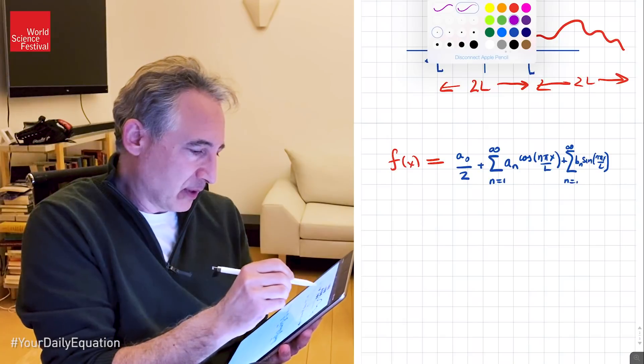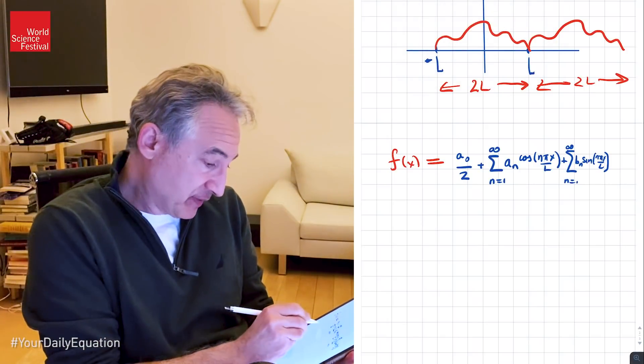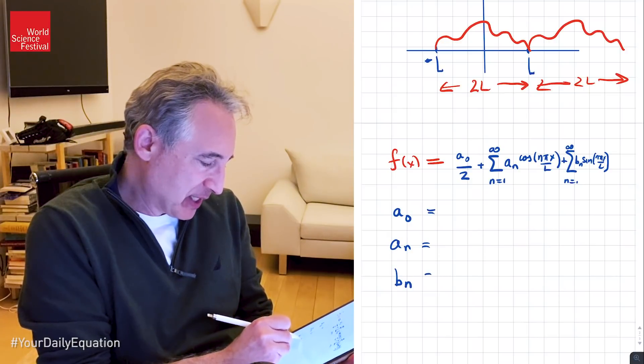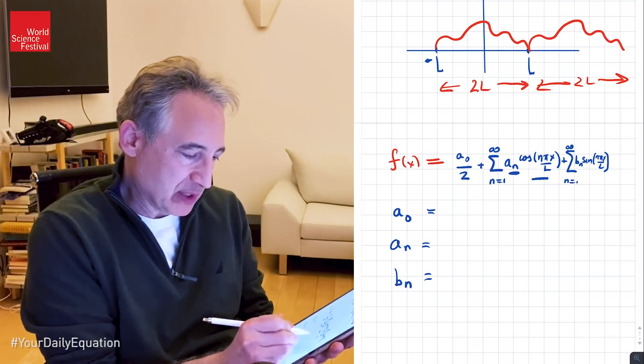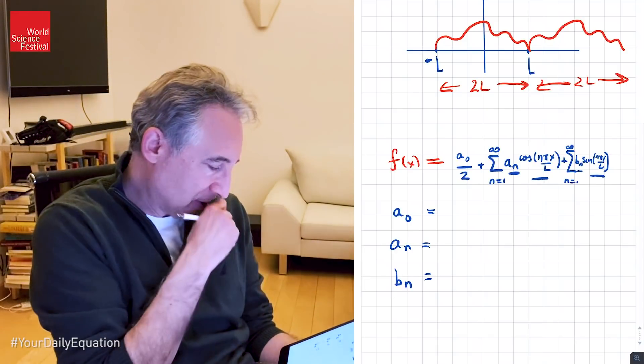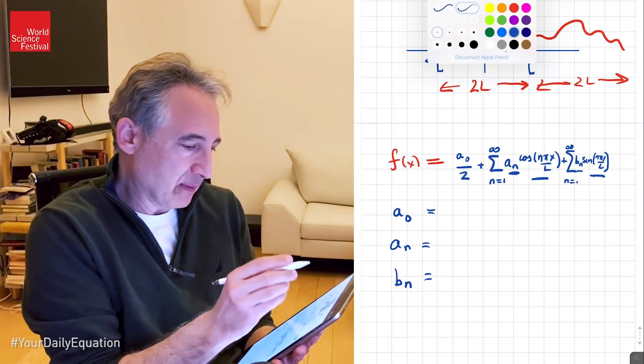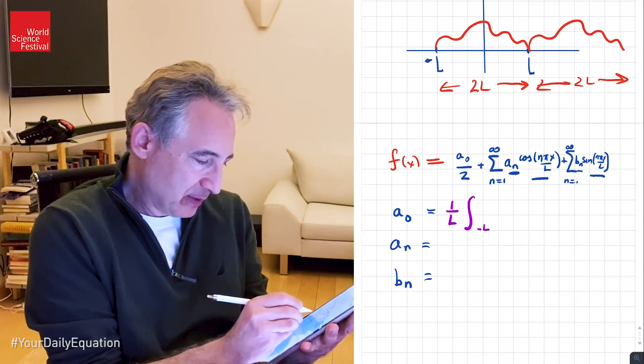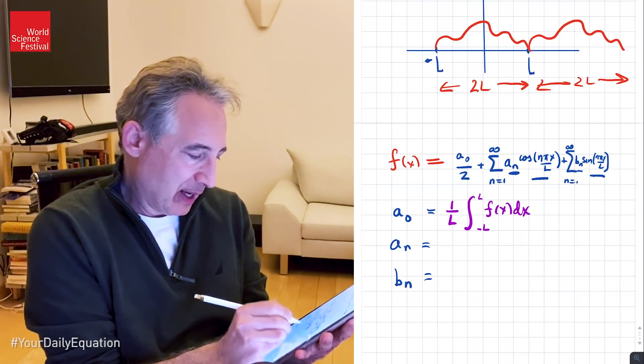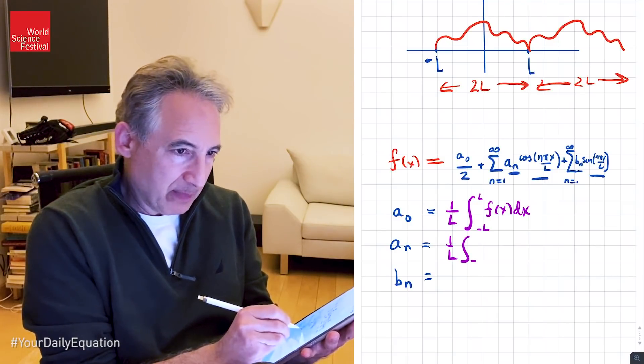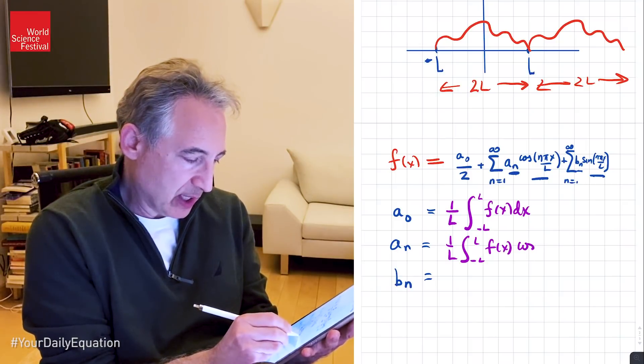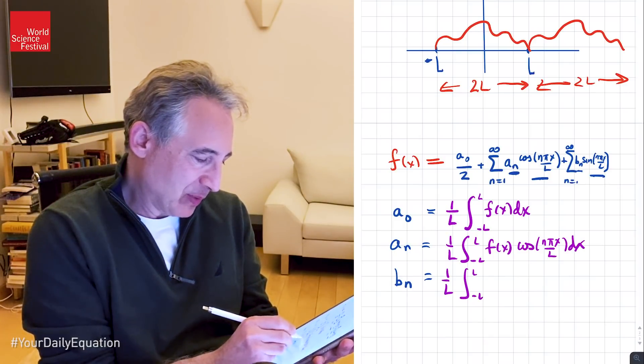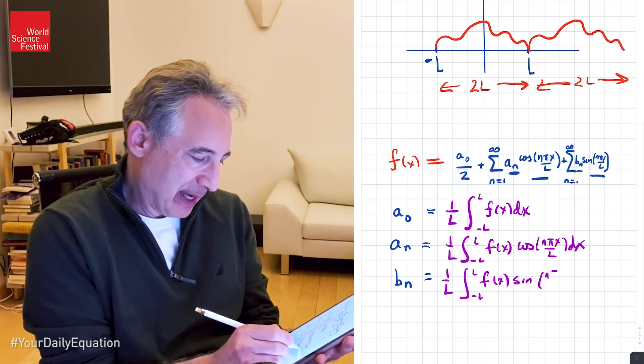But I want to finish off the equation, the theorem, because what Fourier does gives us an explicit formula for a_0, a_n, and b_n. That is an explicit formula, in the case of the a_n's and b_n's, for how much of this particular cosine and how much of this particular sine—sine n pi x over L, or cosine of n pi x over L. And here is the result. So let me write it in a more vibrant color. So a_0 is 1 over L, the integral from minus L to L of f of x dx. a_n is 1 over L, integral from minus L to L, f of x times cosine of n pi x over L dx. And b_n is 1 over L, integral from minus L to L, f of x times sine of n pi x over L.